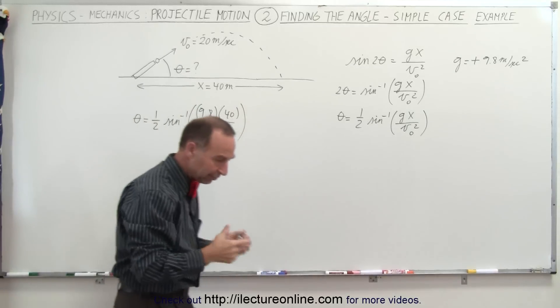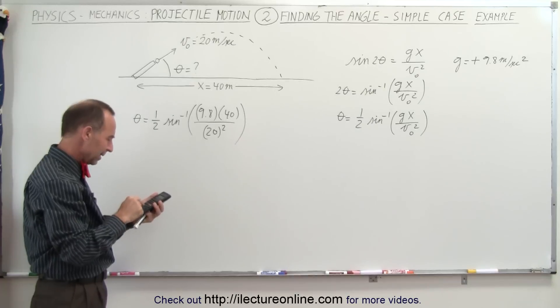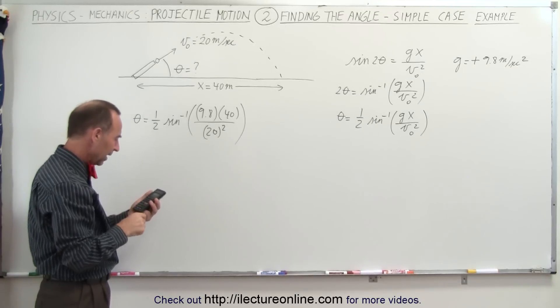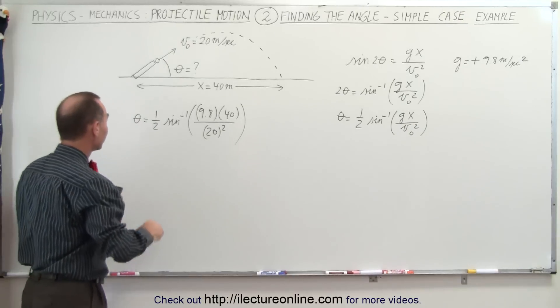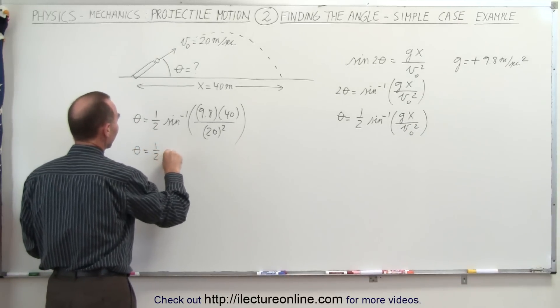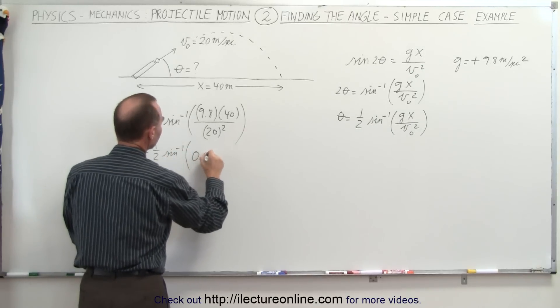Now with the calculator, let's find out what that's equal to. We get 9.8 times 40, divided by 20 squared, which is 400, and we get 0.98. So theta is equal to 1 half times the arcsine of 0.98.